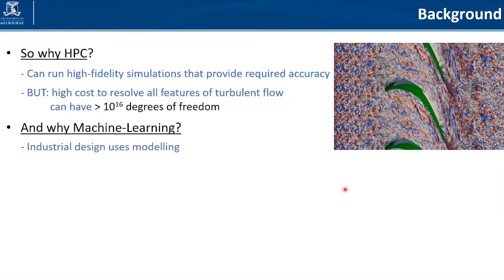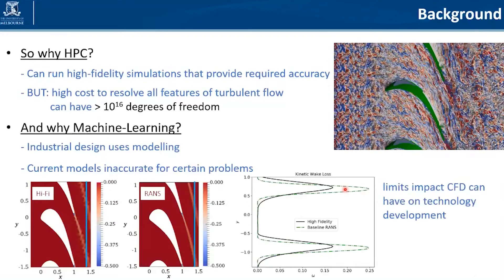Why do we need machine learning? In a design context, we can't afford running hundreds of thousands of design iterations using high-fidelity simulations, so we need modeling — we need to make these simulations cheaper. Industrial design mainly relies on modeling, and models today are just not good enough to get the increase in efficiency that we can try to achieve from new generation engines. Current models tend to be inaccurate for certain problems.